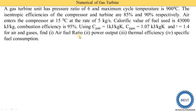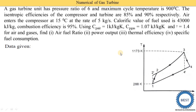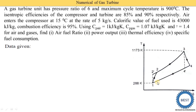We need to find: air-fuel ratio, power output, thermal efficiency, and specific fuel consumption. We write down the given data and draw the T-S diagram. In the T-S diagram, the notation changes for actual cycles: 1 to 2' indicates the isentropic process and 1 to 2 indicates the actual process. Different books may use different notations for these points.